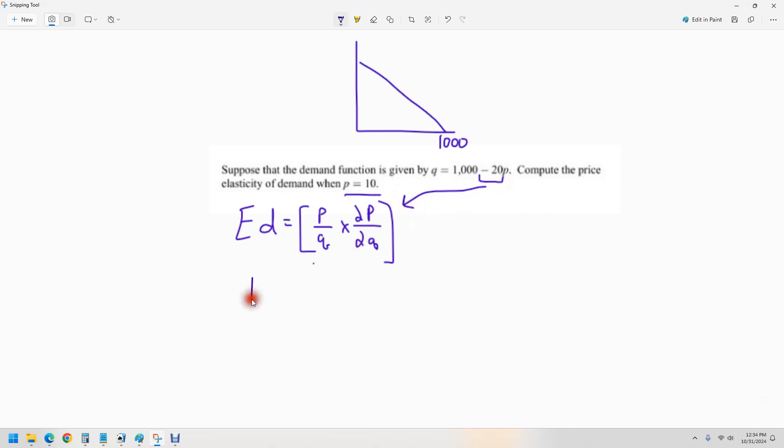So we have most of it already. We're just going to fill in what we already have. We have the price. The price is 10. We're going to figure out the quantity and then we know that that's negative 20.